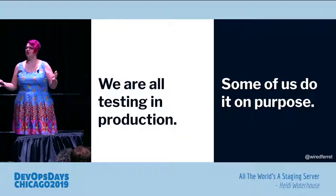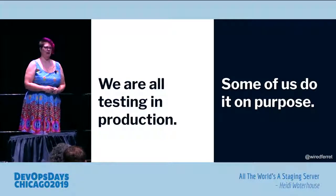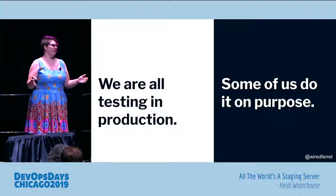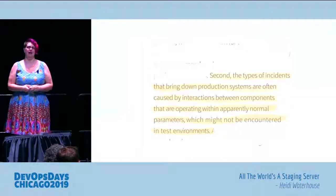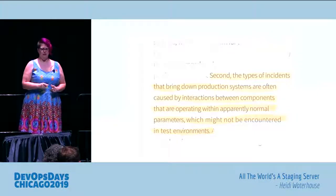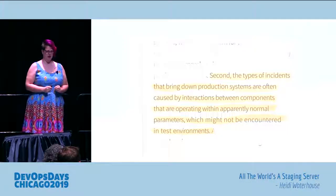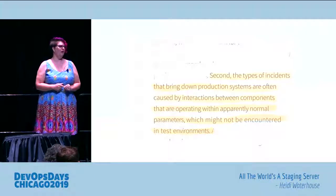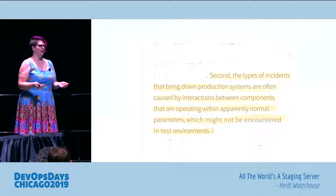Here's the truth: we are all testing in production. Some of us admit it out loud. But no matter how much testing you've done ahead of time, you're testing in production, because there's something that's going to go wrong. This is a quote from the State of DevOps report: 'The types of incidents that bring down production systems are often caused by interactions between components that are operating in apparently normal parameters, which might not be encountered in test environments.' You've had that outage, that moment where nothing is broken but it still won't work.